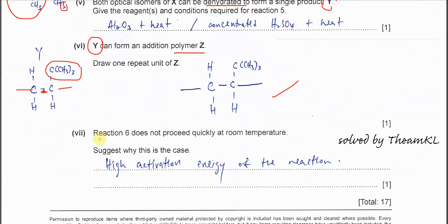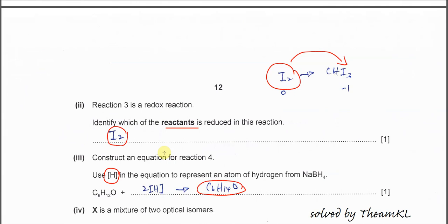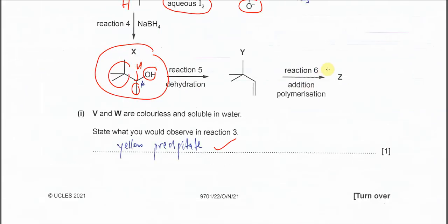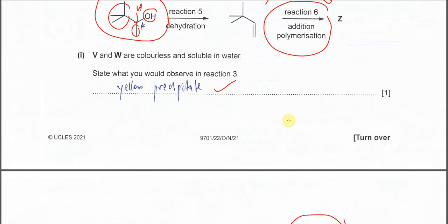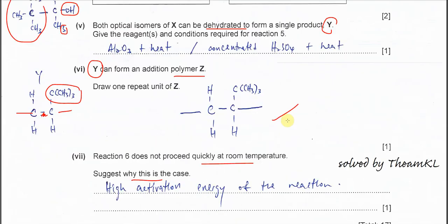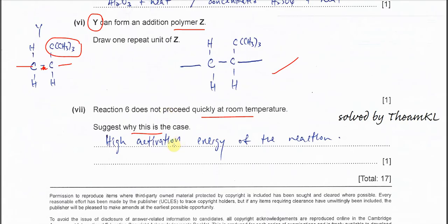Part VII. Reaction 6 does not proceed quickly at room temperature. Suggest why. Reaction 6 is from Y to form Z, the polymer. This one will not really happen easily. The standard answer always is activation energy. High activation energy of the reaction. That's why it's not really fast. That's all for this question. Thank you.